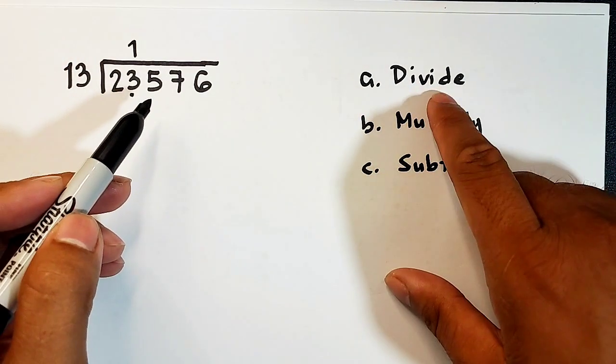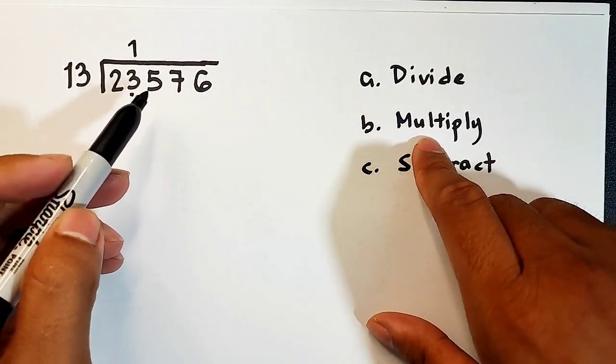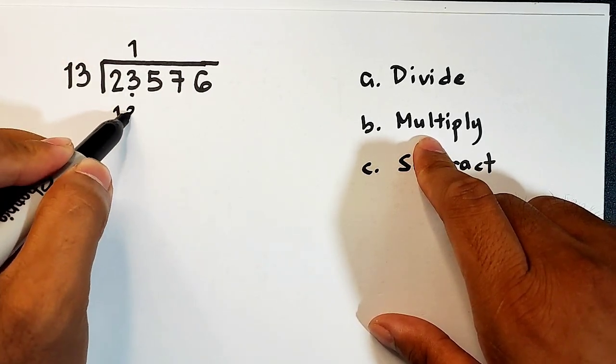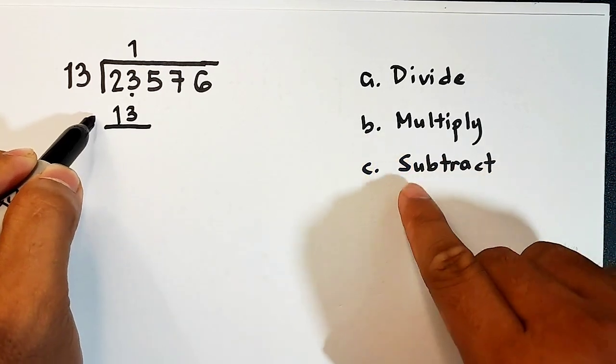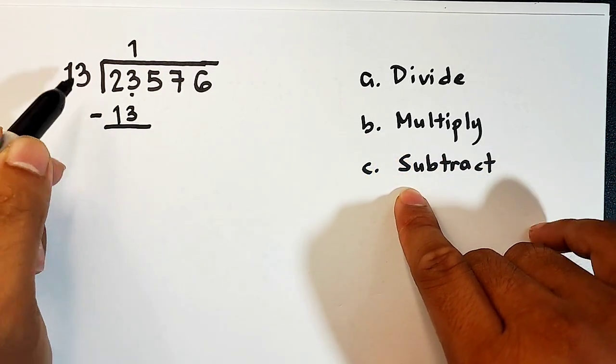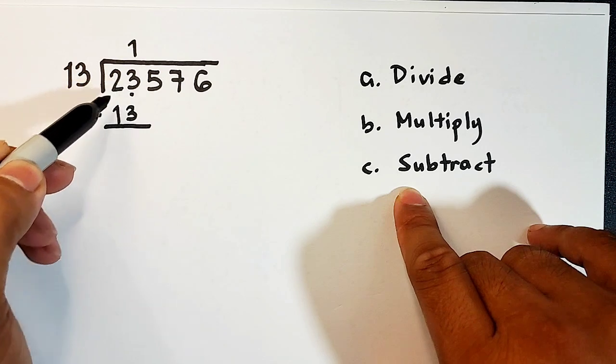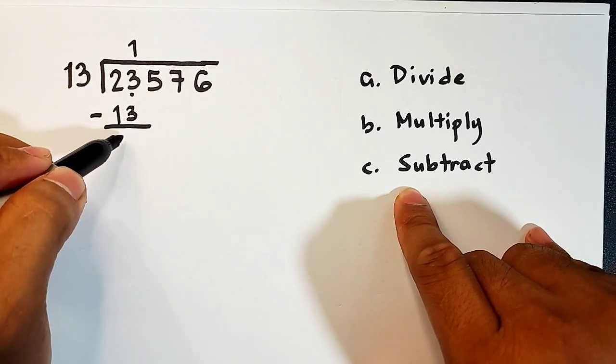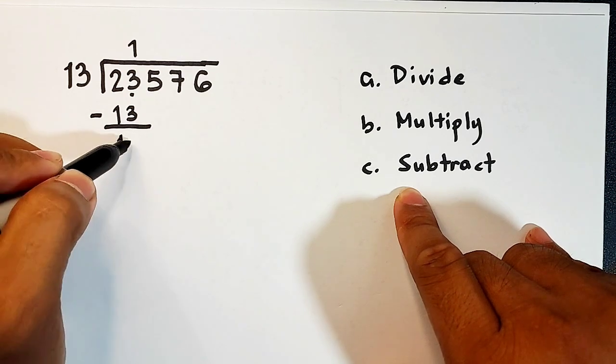And so after dividing, we need to multiply. 1 times 13, that is 13. And then after that, you need to subtract. 23 minus 13 is equal to 10.